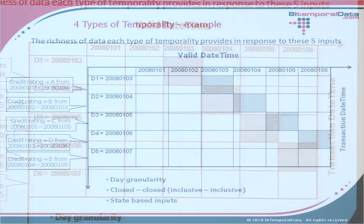An example is worth a thousand words. We're going to walk through five events — shown down the left-hand side of the slide — which are five different changes to a company's credit rating. Since we're talking about two dimensions of time, the x-axis is the valid dimension of time and the y-axis is the transaction dimension of time. We'll show how, as we process these five events, this matrix gets filled up with data, and we'll see the richness that different types of temporality provide.